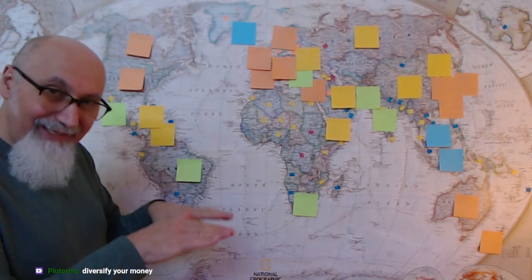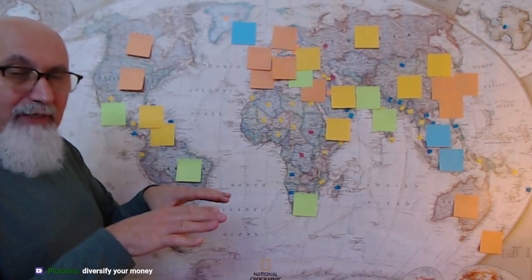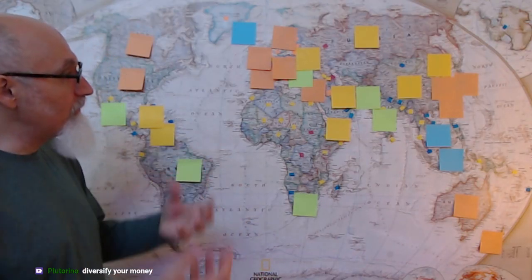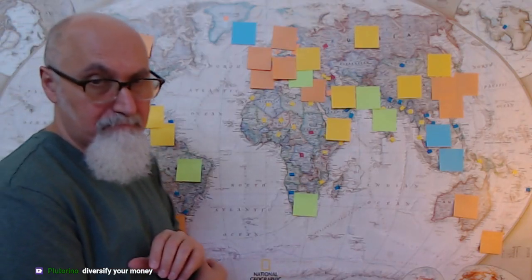That's what I wanted to present in today's mapping stream — going from the micro to the macro and looking at the numbers involved in this global conflict, this world war. Diversify your investments, as Plutorino says. Indeed.